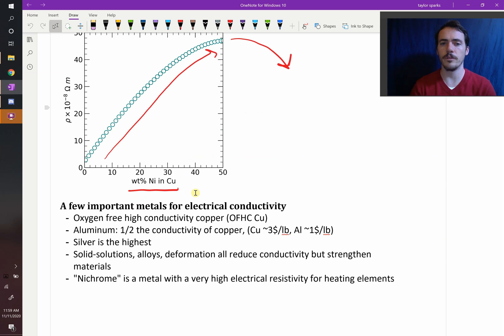A few last things about important metals for electrical conductivity: You have oxygen-free high conductivity copper—we don't usually think about copper as having oxygen in it, but you can get oxygen in the lattice and along the surfaces. If you remove that, you get really high conductivity copper. Aluminum is a really important electrical conductor because it's only about half the conductivity of copper, so it's not as good, but it's way cheaper—copper is about three bucks a pound, aluminum is about a dollar a pound. So you're paying a third the price for something half as good in conduction. Silver is our highest conductor. Solid solutions, alloys, and deformations are all going to reduce the conductivity. You can also end up with specialty alloys like nichrome—a mixture of nickel, chrome, and other things—which is designed to have really high electrical resistivity for making things like heating elements. That's electrical conductivity of metals.